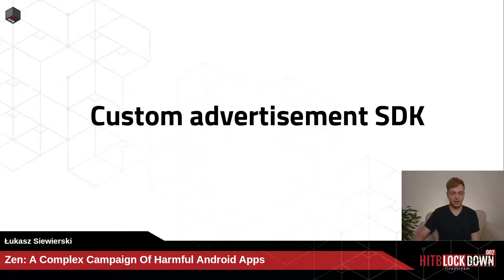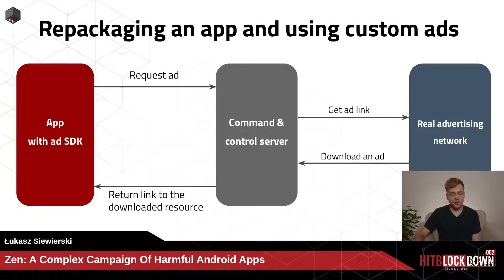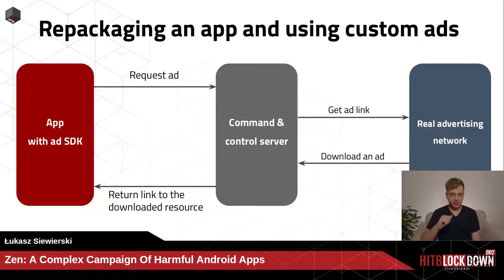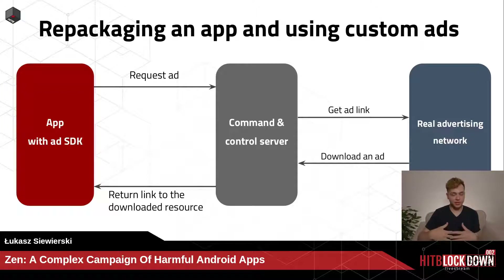The first category is the custom ad SDK. A custom advertisement SDK works like a proxy server for ads. An app with an ad SDK requests an ad from the command-and-control server. The C&C server gets the ad link from the real advertising network, downloads the ad, and returns the link to the downloaded resource. That way you have a proxy to all the real advertising networks, effectively hiding them from the actual app.